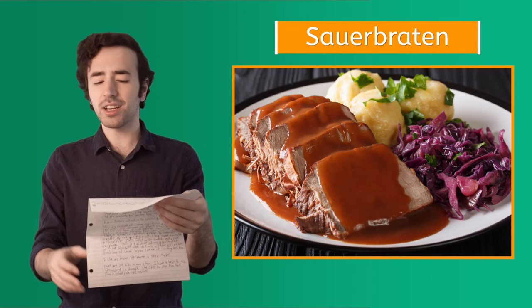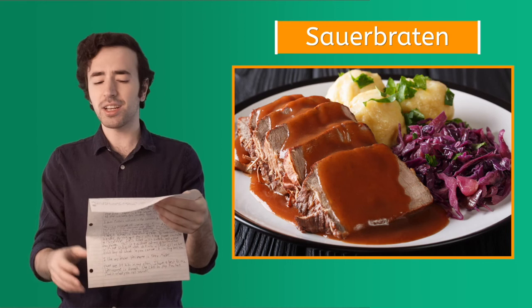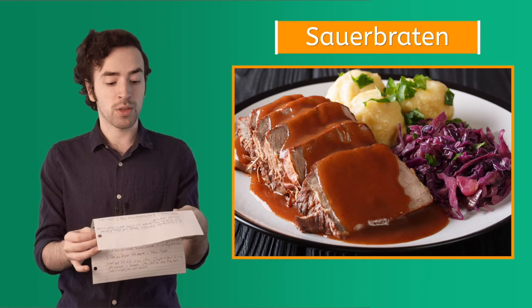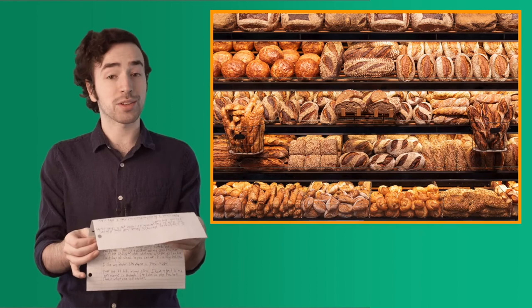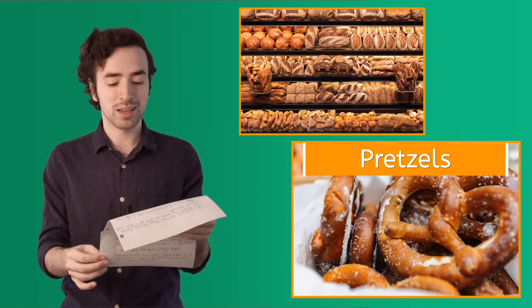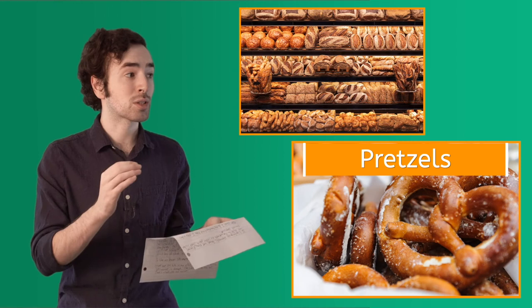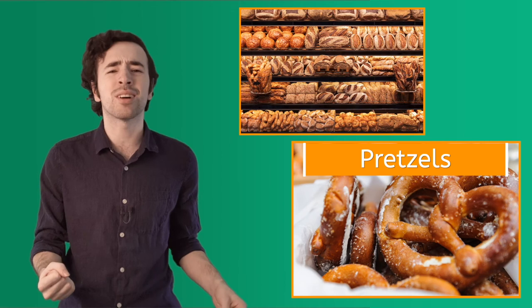We also like to eat Schweinebraten, which is a pork roast, and sauerbraten. It's a kind of sour tasting roast, but it's so good. My mom cooks it with gravy, red cabbages, and potato dumplings. We always get fresh bread at the bakery. We get pretzels, too, as a special treat. And they're still warm. Wow. All this food looks so good. And fresh pretzels right out of the oven. Delicious.